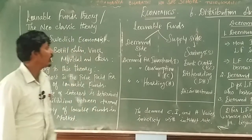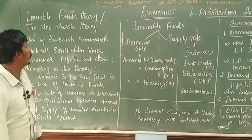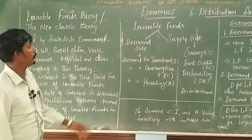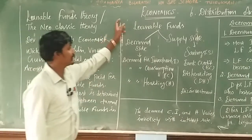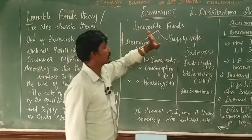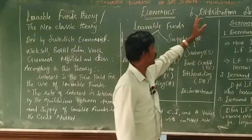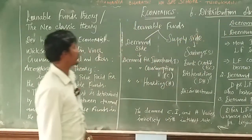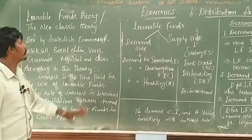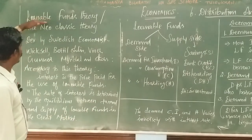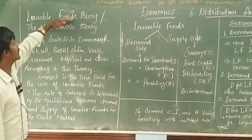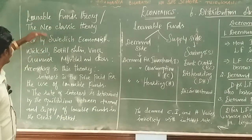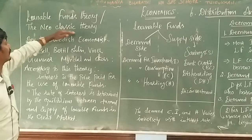Dear students, now we are going to learn the topic for 11th century economics, chapter 6, distribution analysis. The topic is loanable funds theory, or neoclassical theory.